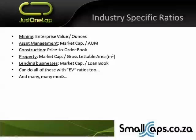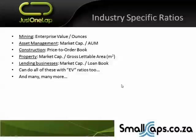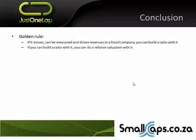For lending businesses — Capitec is all the rage and African Bank Financial Services is making a comeback. What is a micro-lending business actually selling? It's selling its loan book. So take the market cap divided by the loan book and compare across companies. But be careful of different qualities of loan books — they might have bad debt sitting in the loan book they haven't written off. Capitec also has a banking side, so if you just look at the loan book, you're ignoring that. You could also use enterprise value instead of market cap. The golden rule is: if it moves, can be measured, and drives revenue in a listed company, then you can build a ratio out of it — and if you can build a ratio, you can do relative valuation.